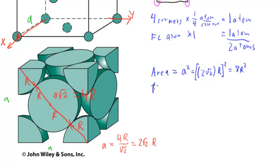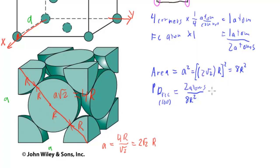So the planar density of FCC on the 100 plane equals 2 atoms divided by 8r², which simplifies to 1/4 atom per r squared.